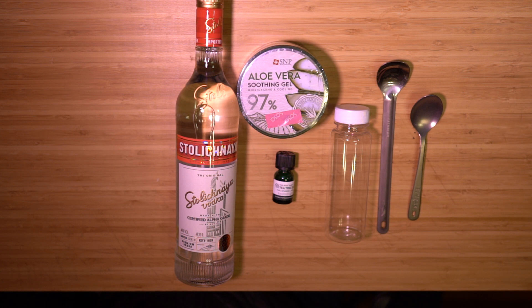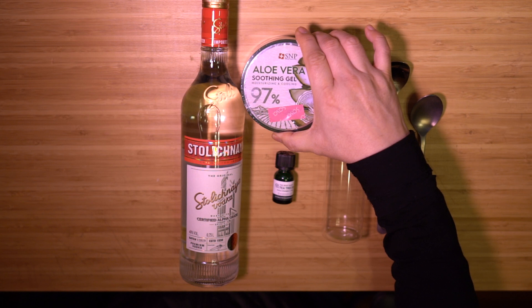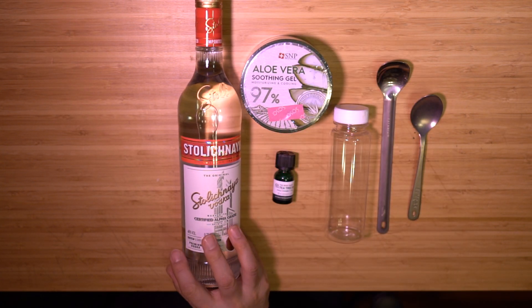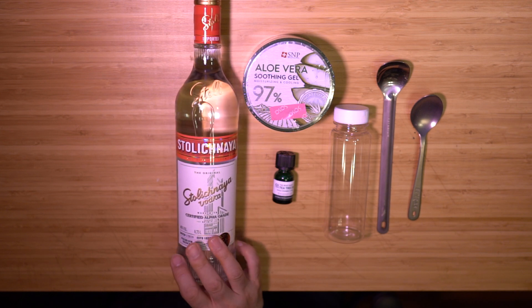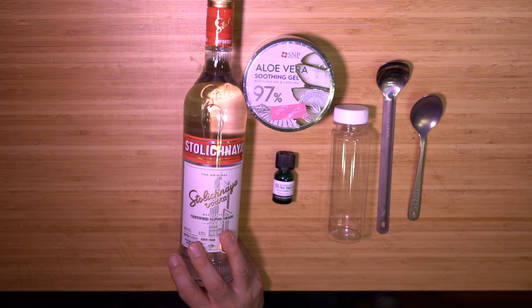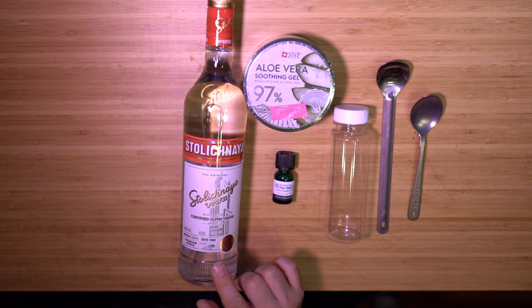So what I did was I went to a shop called Shasha. They sell beauty products. And I found this aloe vera gel. And then I bought this. This is probably the cheapest vodka you can get. I used to drink a lot of this in college. Still, it's cheap, but still good.